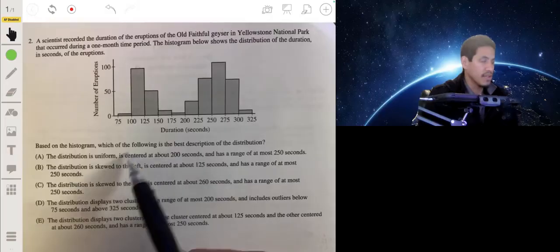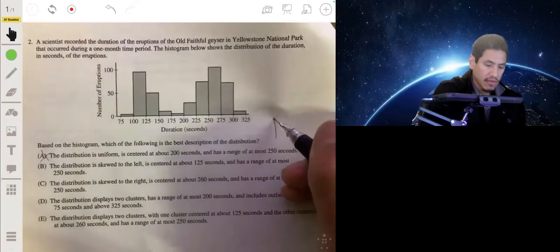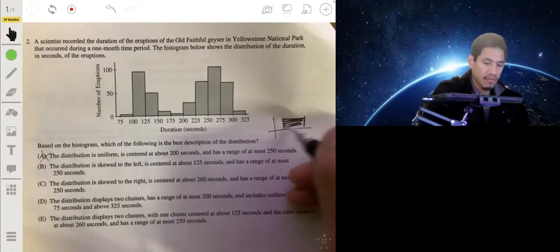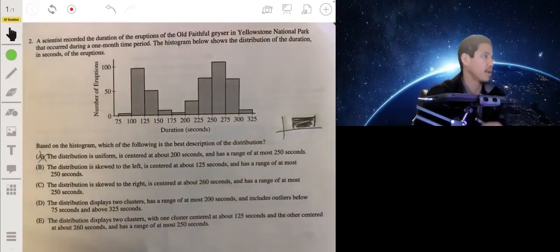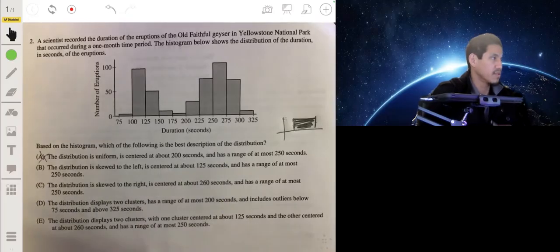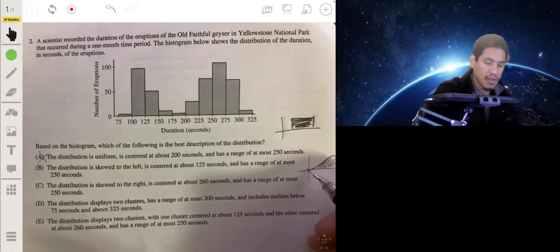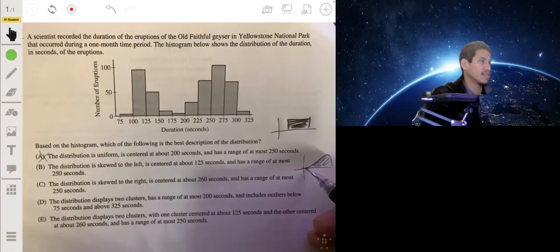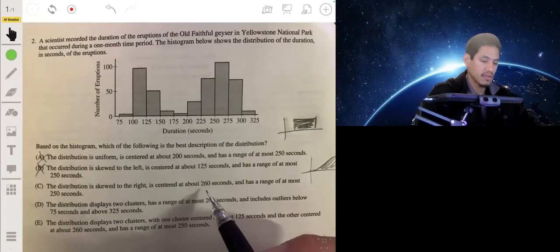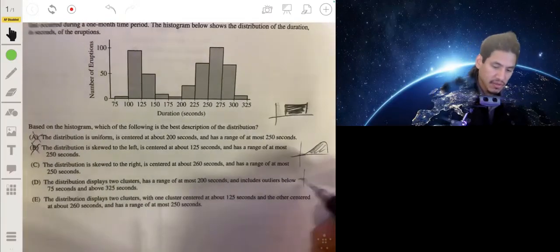The distribution is uniform - not uniform, so we can stop right there. Uniform would be if it was like an even graph, like a rectangle. It's not going to be an example of a uniform graph. Skew to the left, centered at about 125, has a range of almost 250. So skew to the left would be that the graph would do something like this - tail would go to the left. And it's definitely not skew to the left. Skew to the right, centered at about 260. So it's not going to be skew to the right, skew to the right is just going the other way.